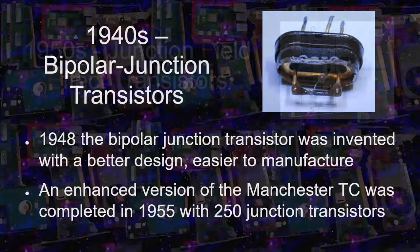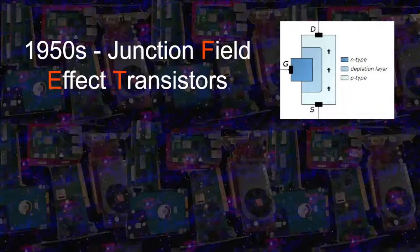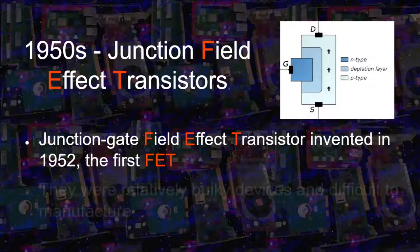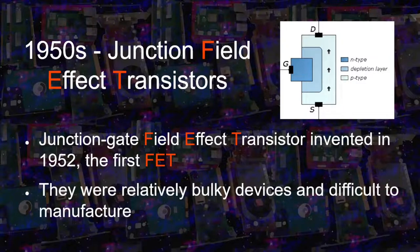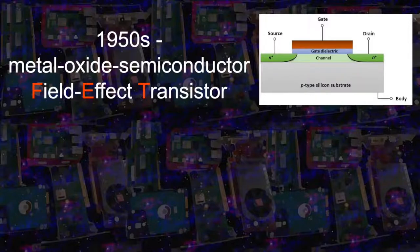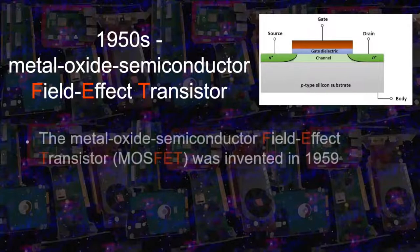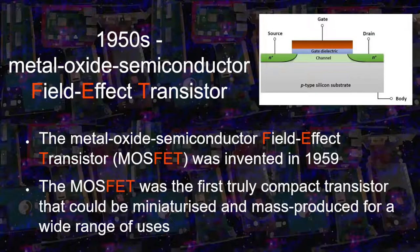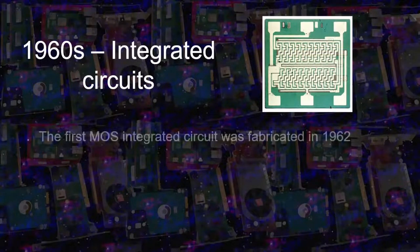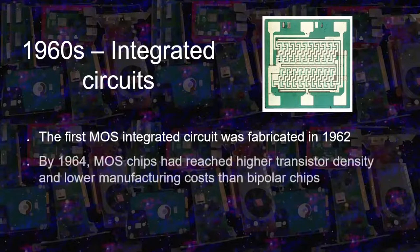But in the same period, field effect junction transistors appeared. Their manufacturing was a bit difficult because of the higher complexity. In the late 50s, the metal oxide semiconductor field effect transistor — the MOSFET — was invented. This was the first really compact transistor that could be miniaturized and mass produced for several applications. A few years later, integrated circuits — the first chips — appeared. Soon, MOSFET integrated circuits achieved a higher density of transistors and a lower manufacturing cost than bipolar transistor chips.